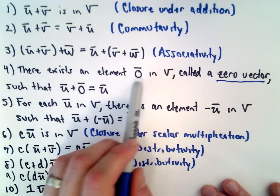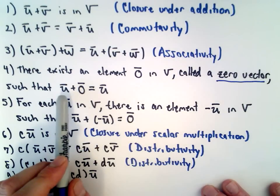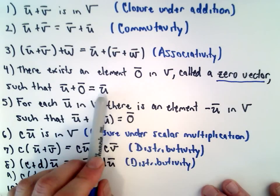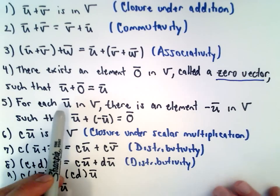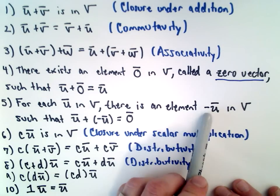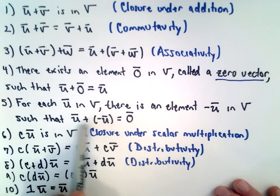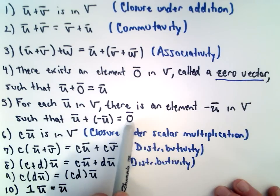There's going to exist an element that's called the zero vector, so that if we take vector U plus that zero vector, we just get that vector U back. And for each vector U in V, there's an element called negative U in V, so that when we add those two vectors together, we get the zero vector.